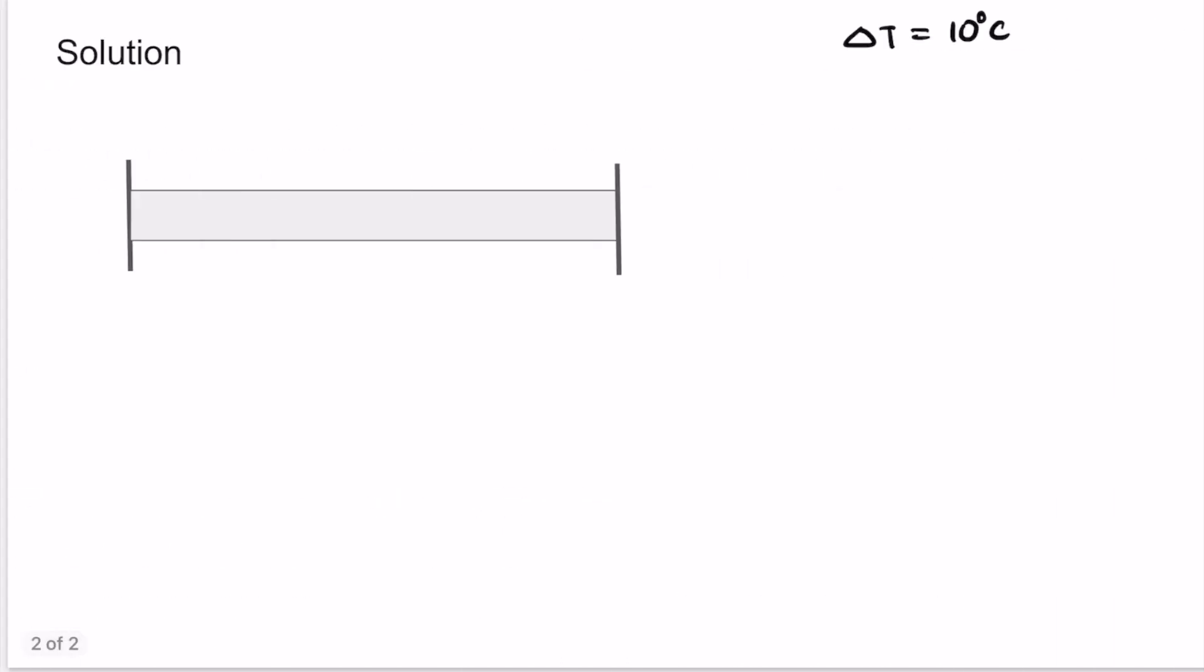In this problem, it is given that there is a bar which is between two rigid supports. Let's call this as A and B. There is an increase in the temperature of 10 degrees Celsius. So if this support B would not have been here, then due to this increase in temperature, the bar would have expanded like this. Let's call this expansion as ΔL.